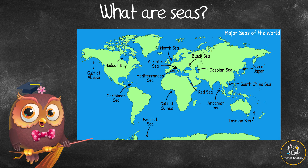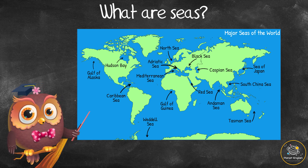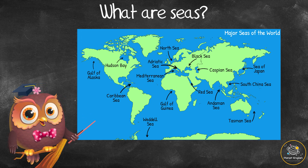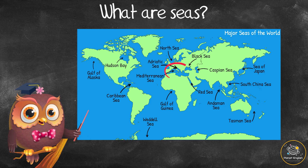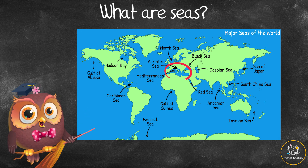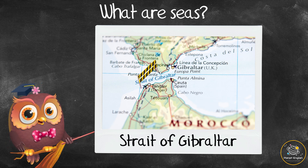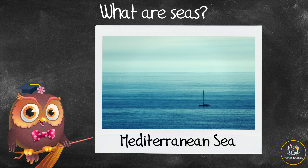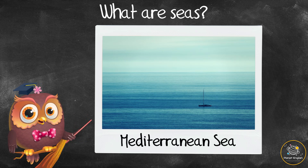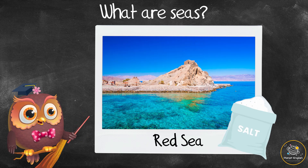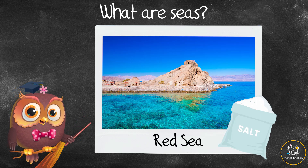What are seas? Seas are parts of the oceans which are almost totally or partly surrounded by land. There are more than 50 seas on Earth. Seas that are almost totally surrounded by land, like the Mediterranean Sea, are connected to oceans by narrow waterways called straits. These straits limit the movement of water between seas and oceans, meaning these seas do not have tides or water like the oceans.